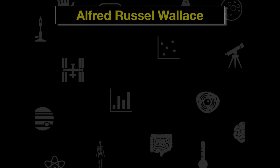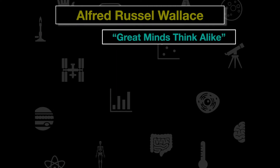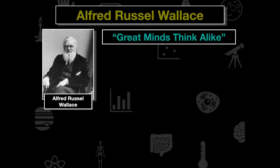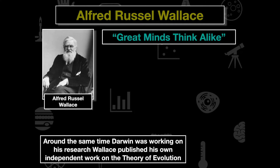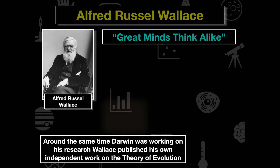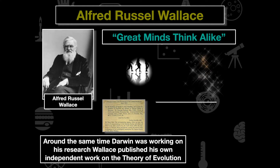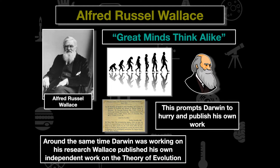Another important individual is Alfred Russel Wallace. Great minds think alike — Wallace was alive at the same time as Darwin, and around the same time Darwin was working on his research, Wallace independently published a theory of evolution. This forced Darwin to hurry up and publish the Origin of Species. It also solidified the fact that other scientists around the world were finding similar evidence and showing that evolution was occurring — giving Darwin both scientific support and the moral support that his ideas were correct.